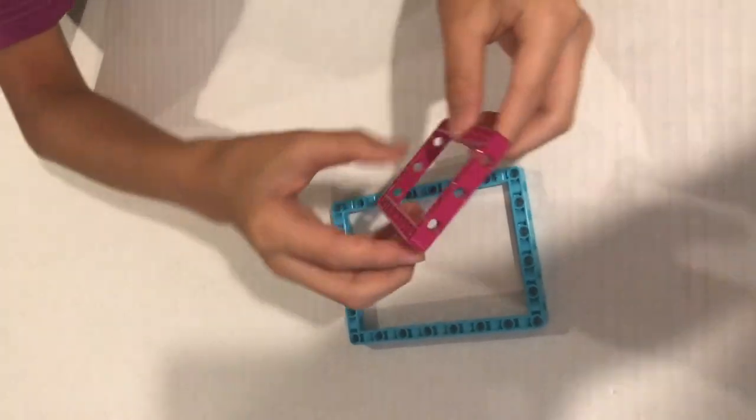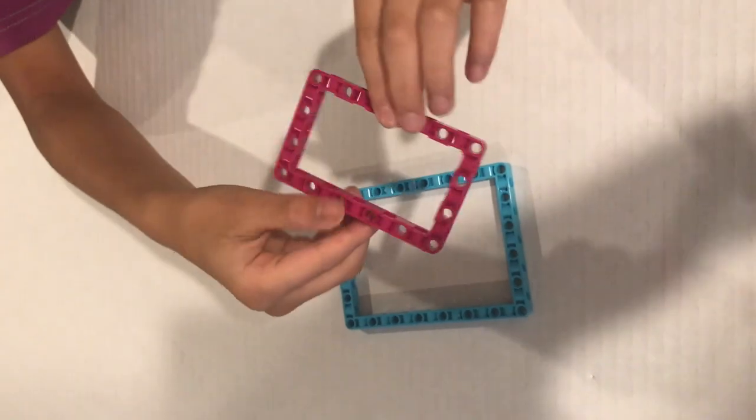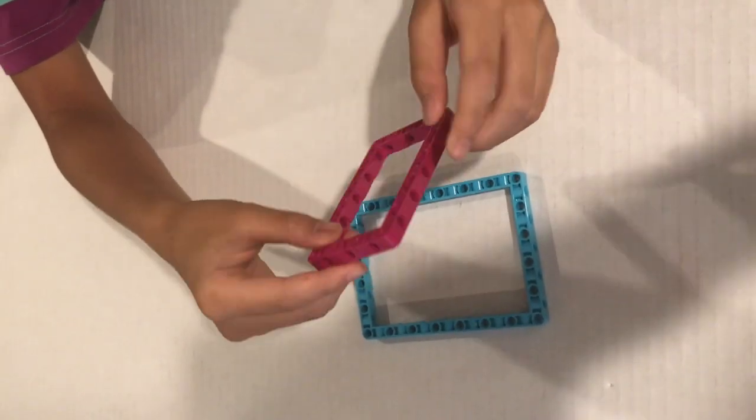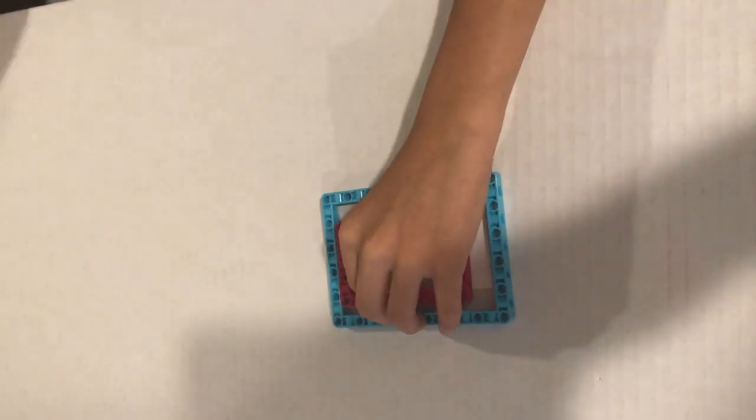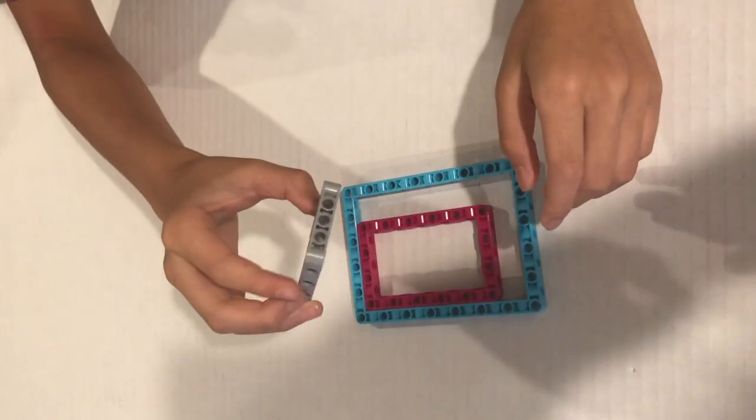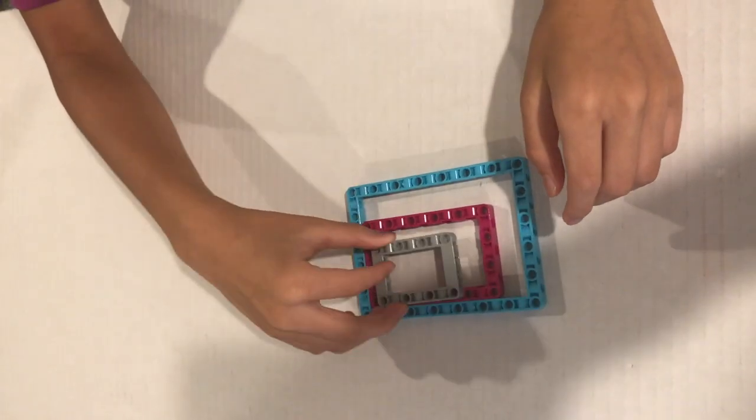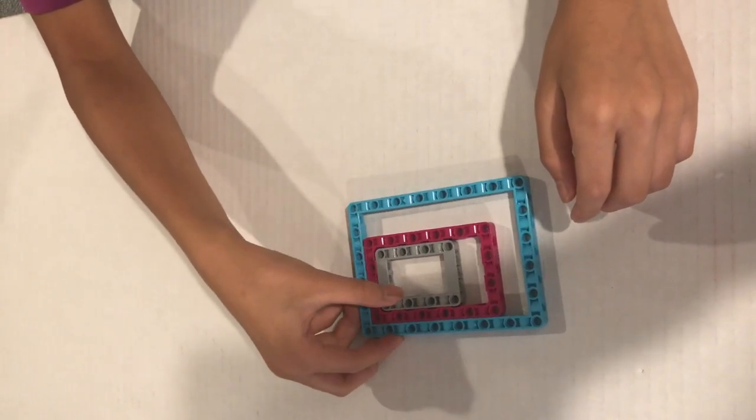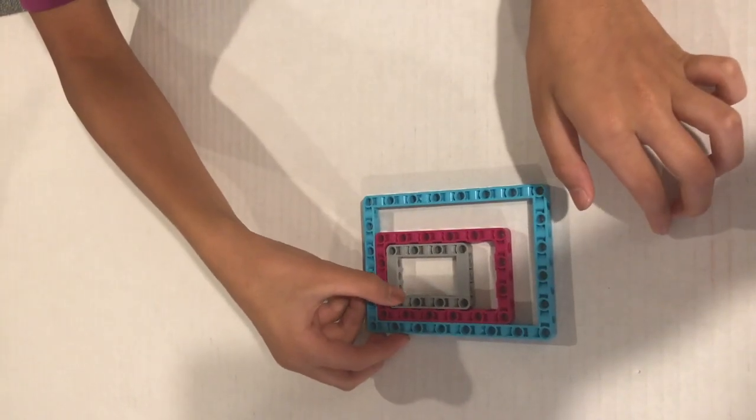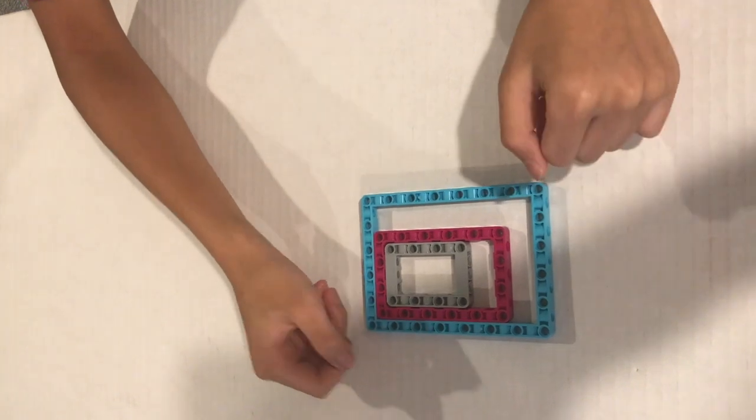We also have this smaller 7 by 11 square frame that will help you achieve the same purpose. Together with the existing 5 by 7 square frame, this family of frames will help you build more creative and stronger structures.